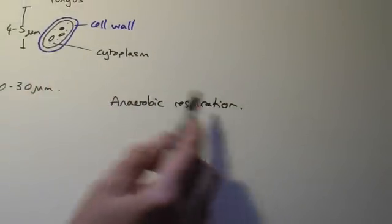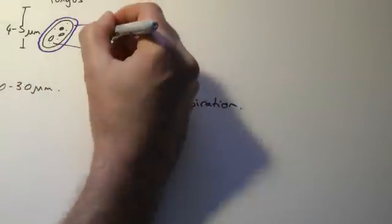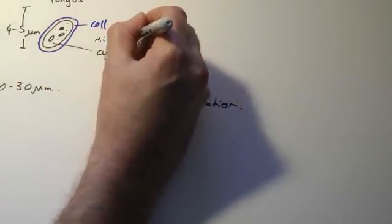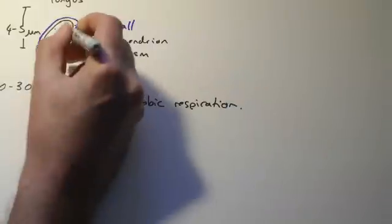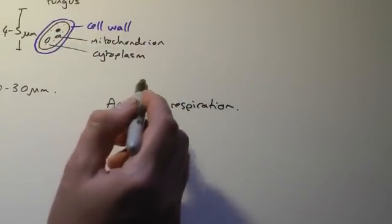The enzymes that are needed for anaerobic respiration are in the cytoplasm of the cell. I should have labelled my mitochondria there, so this would occur in the cytoplasm of the cell.